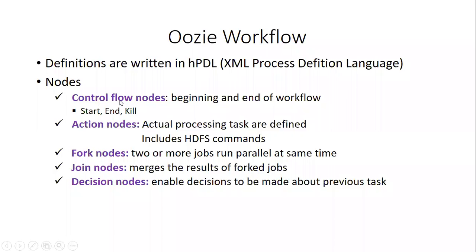There are basically two nodes most commonly used: control flow nodes and action nodes. Control flow nodes define the beginning and end of the workflow using a node named 'start', and in case of error, 'kill'. Action nodes are instructions that function as necessary triggers initiating the execution of an action when the necessary conditions are met — they actually process the tasks that are defined and also include HDFS commands. Then we also have fork nodes, join nodes, and decision nodes.